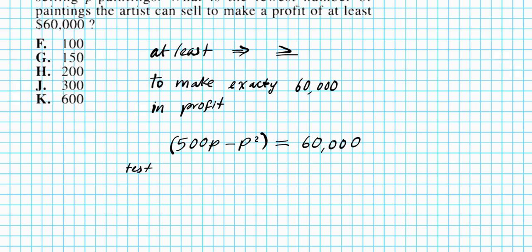So we're going to test the options to see which p value yields our target of 60,000. Which p value yields 60,000? That's the question.